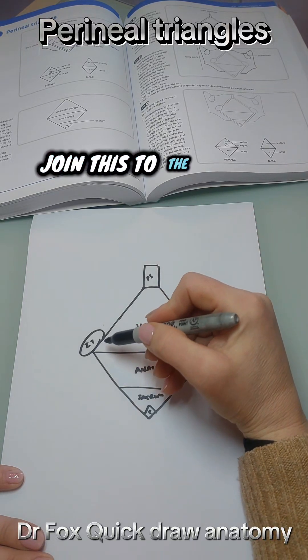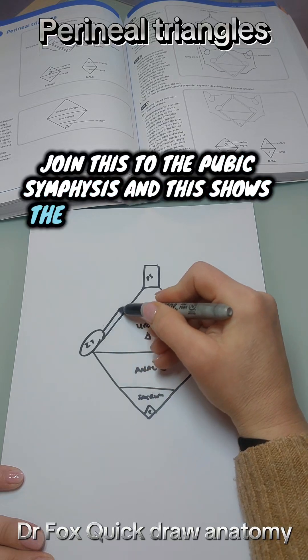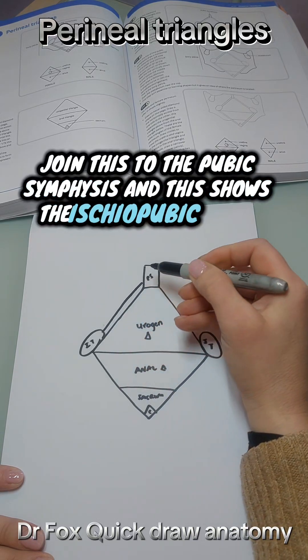Join this to the pubic symphysis and this shows the ischial pubic rami.